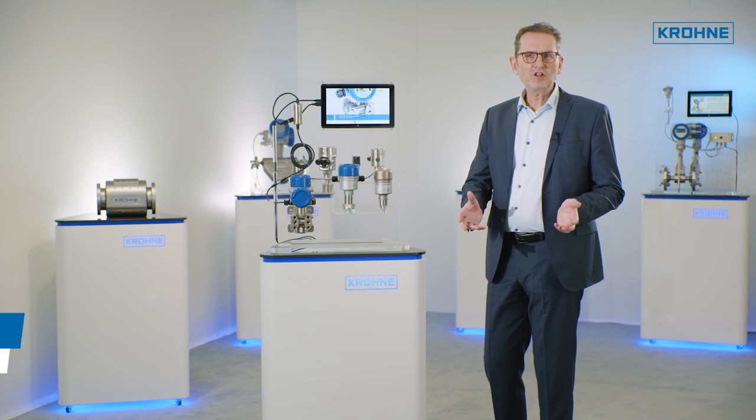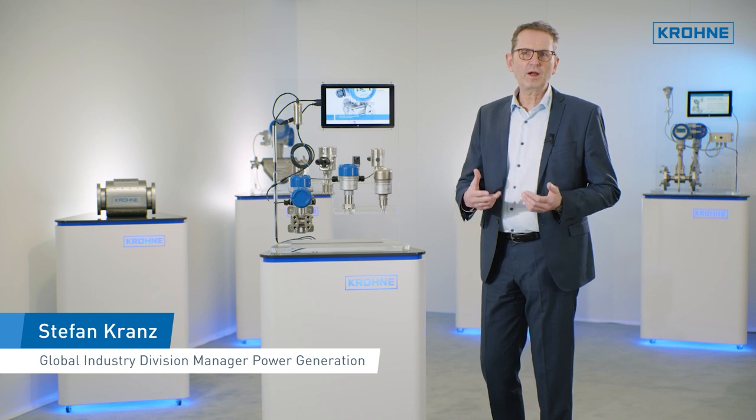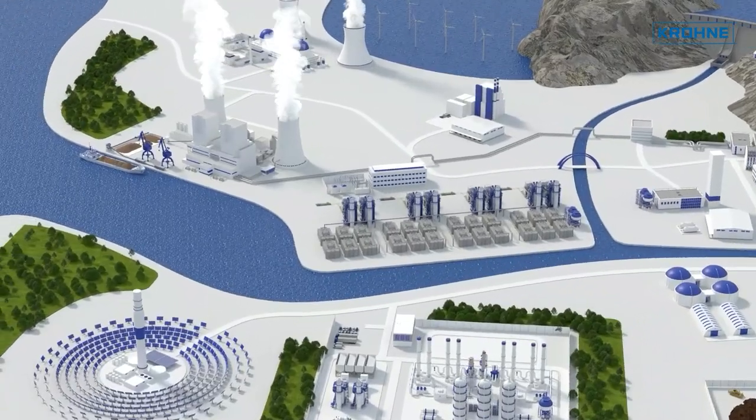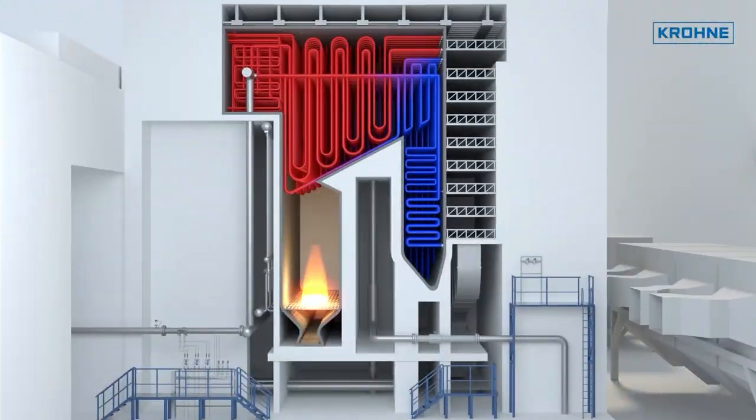Steam from modern highly efficient power stations is fed to the turbine at temperatures of up to 700 degrees C and pressures of up to 330 bar. Safe and accurate flow measurement is crucial for the availability and efficiency of the entire plant.